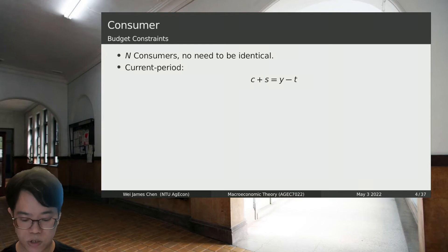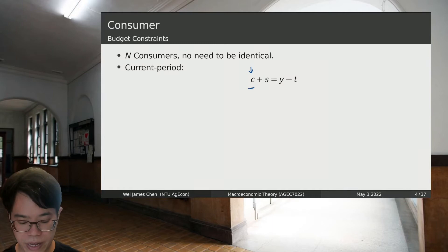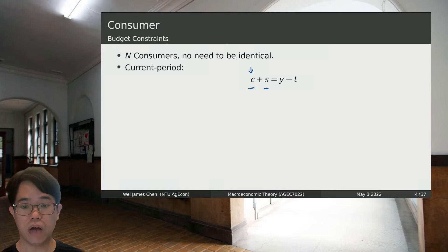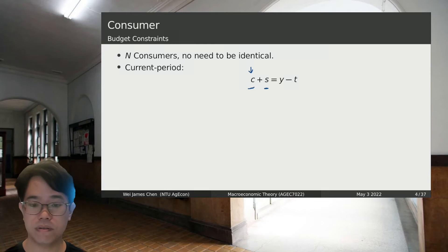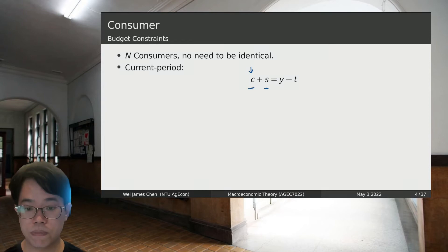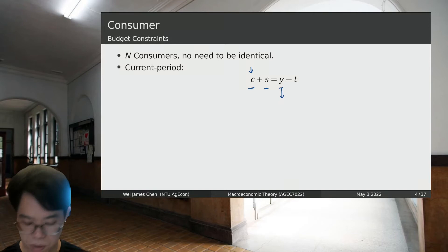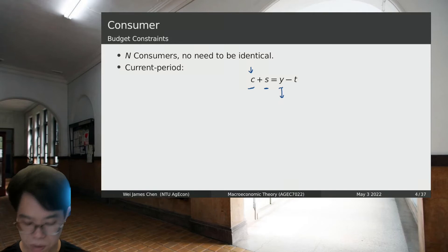We start with the consumer's budget constraint. In this model we have N consumers, and they don't need to be identical — their preferences may be different and their endowments may be different. However, they all face the same market interest rate. In the current period, an individual has some consumption c and saves some money s. There is no production; the consumer simply receives income y from an exogenous endowment and pays tax t.